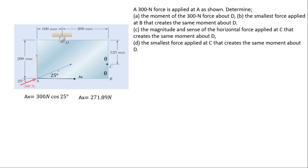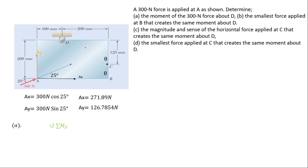For the y-component: Ay = 300 newton × sin 25°, which gives us 126.785 newtons. Resolving this force first is necessary before solving the question. Now let's move to part (a), finding the moment around D.